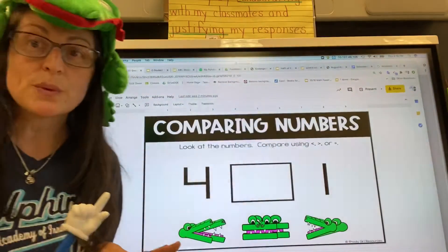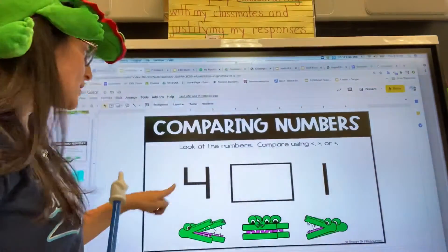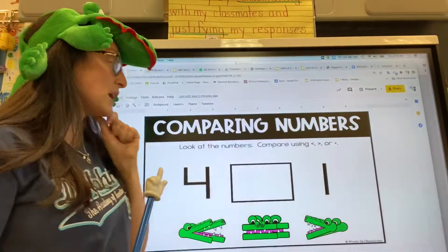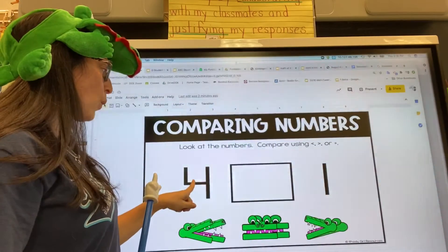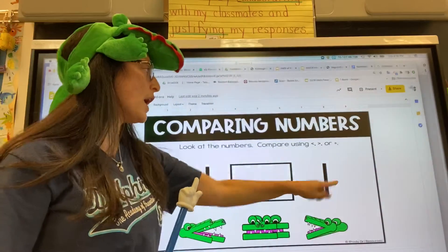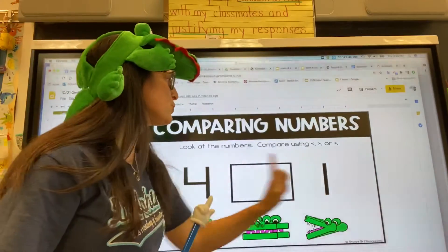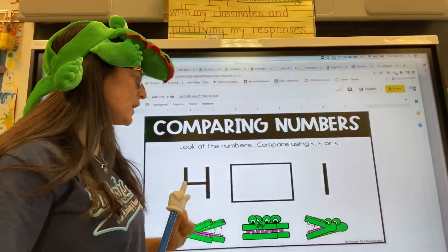Now today when you're doing your activity you're going to look at the two numbers and you're going to think, will he eat the four? The one? Or are these two the same or equal?